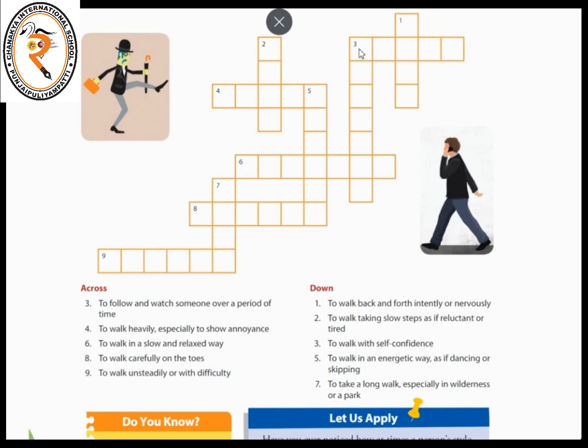How many boxes are there? 1, 2, 3, 4, 5, 6, 7. So it is a 7-letter word you have to find out in order to fulfill this clue. The clue is: to follow and watch someone over a period of time.